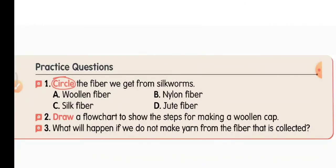Second question: draw a flowchart showing the steps for making a woolen cap. First, wool is collected from the sheep — this is called shearing. Then it is washed and cleaned. Third, the fiber is knitted into cloth. Finally, the cloth is used as a sweater. Draw this flowchart in your EVS notebook after reading the lesson.